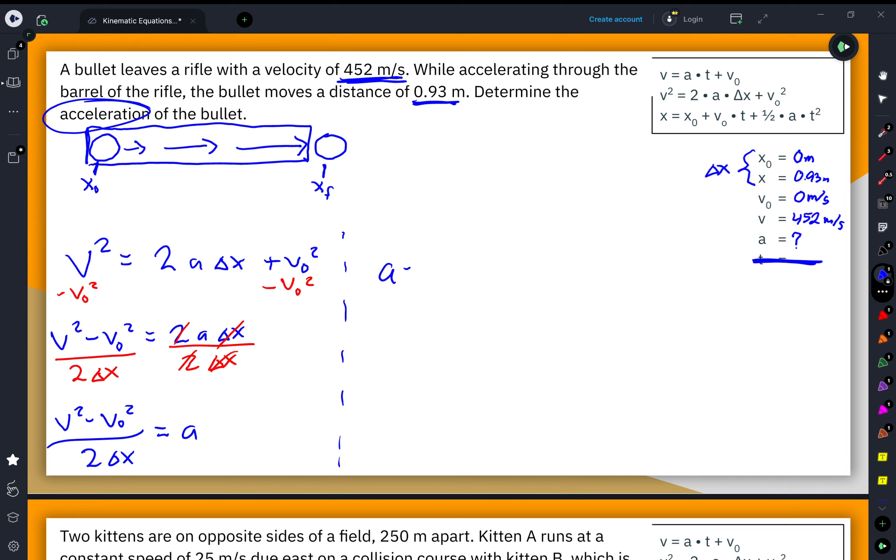At this point, I just need to plug in my values. I know the final velocity is 452 meters per second. All of that gets squared minus my starting velocity of 0 meters per second squared. All of that divided by 2 times my displacement, which is 0.93 meters.